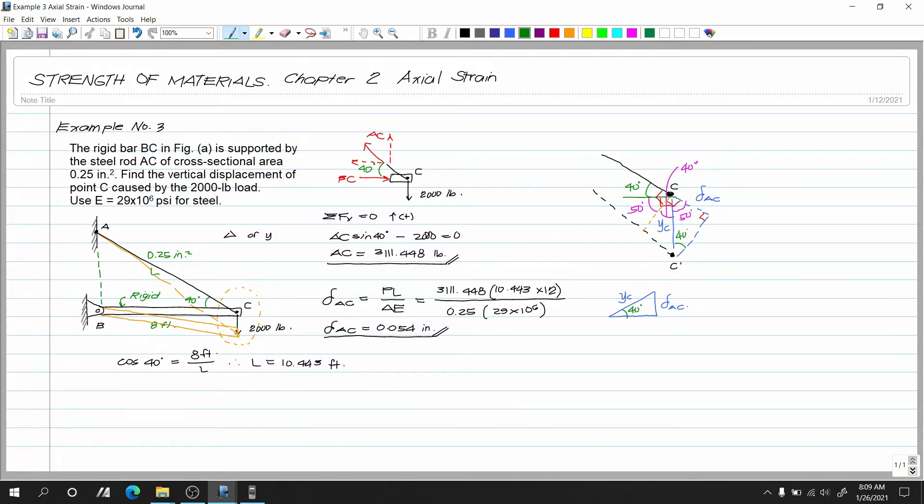Ngayon ano ang relationship ng ating deformation kay 40 degrees? This is opposite. Yan yung ating namang YC is yung ating hypotenuse. Ayan. So kung ano yun opposite so sine so sine of 40 degrees equals to deformation AC over displacement C. Therefore ating displacement at C is equals to deformation AC over sine of 40 degrees.